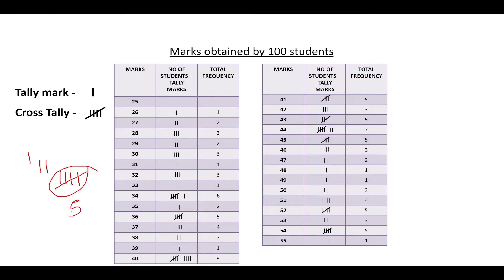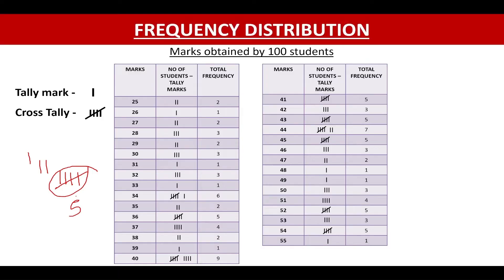I hope the concept is clear. So now, 25 marks have been obtained by two students, so we put two tally marks and write two in the frequency because it has been obtained by two students. This method of representation of data is called frequency distribution. These marks are called the variable x, and the number of students is called the frequency because it shows how frequently the variable occurs.